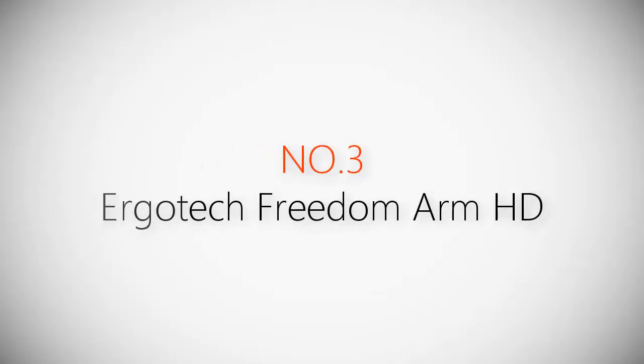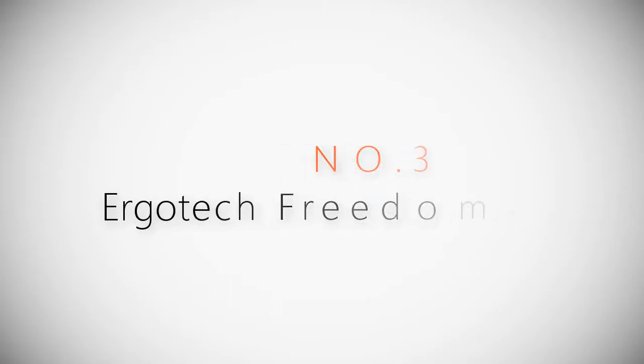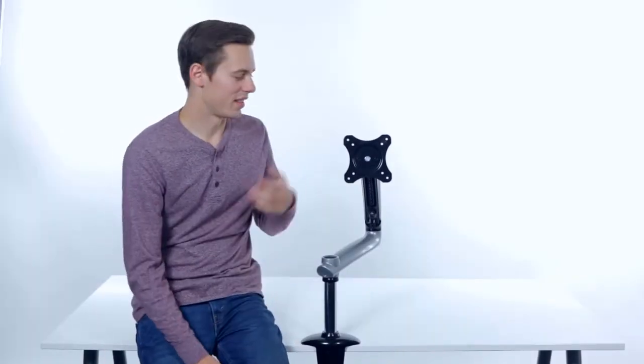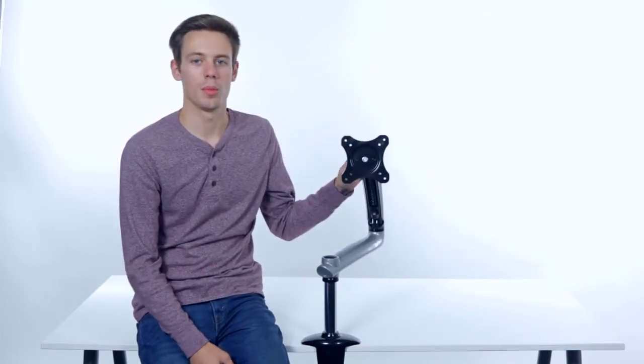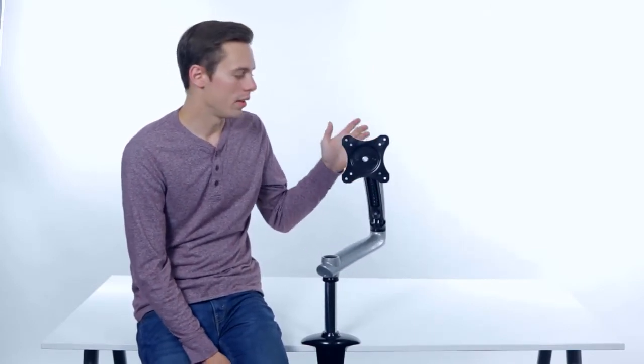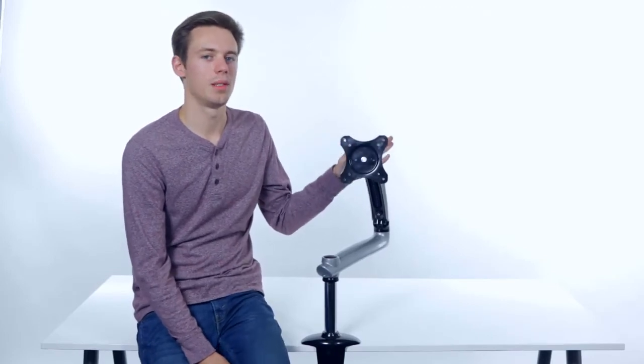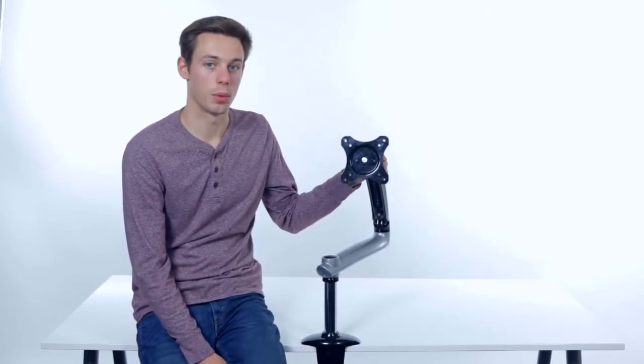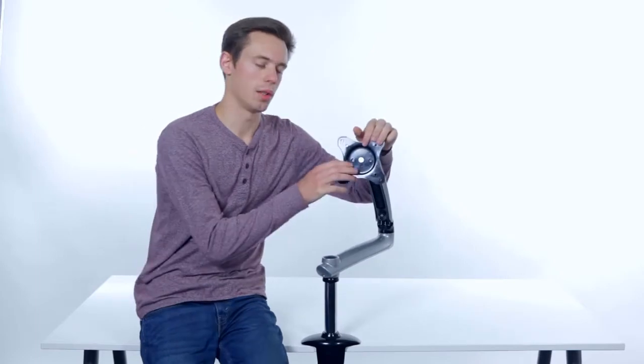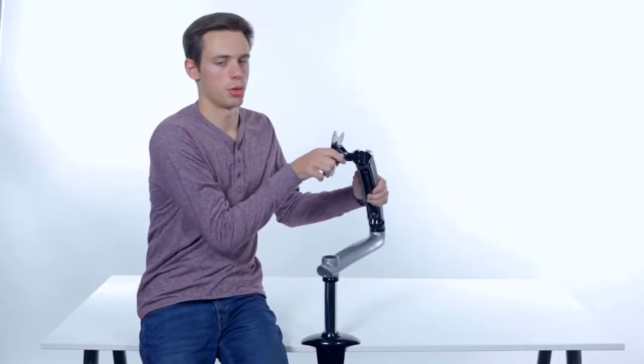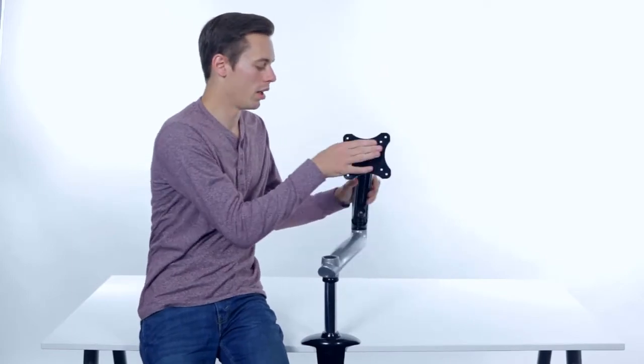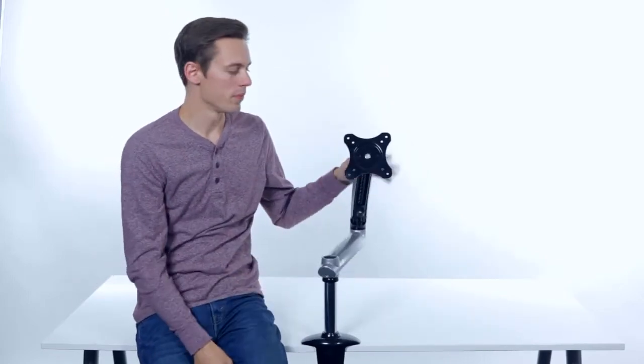Product number three: Ergotech Freedom Arm HD. Hi, my name is Chris and today I'm here with the Ergotech Freedom Arm. The Ergotech Freedom Arm is an articulating monitor arm that is capable of holding a 27 inch monitor that weighs up to 17.8 pounds. It can tilt that monitor 135 degrees, hang it 180 degrees, or rotate it 360 degrees.